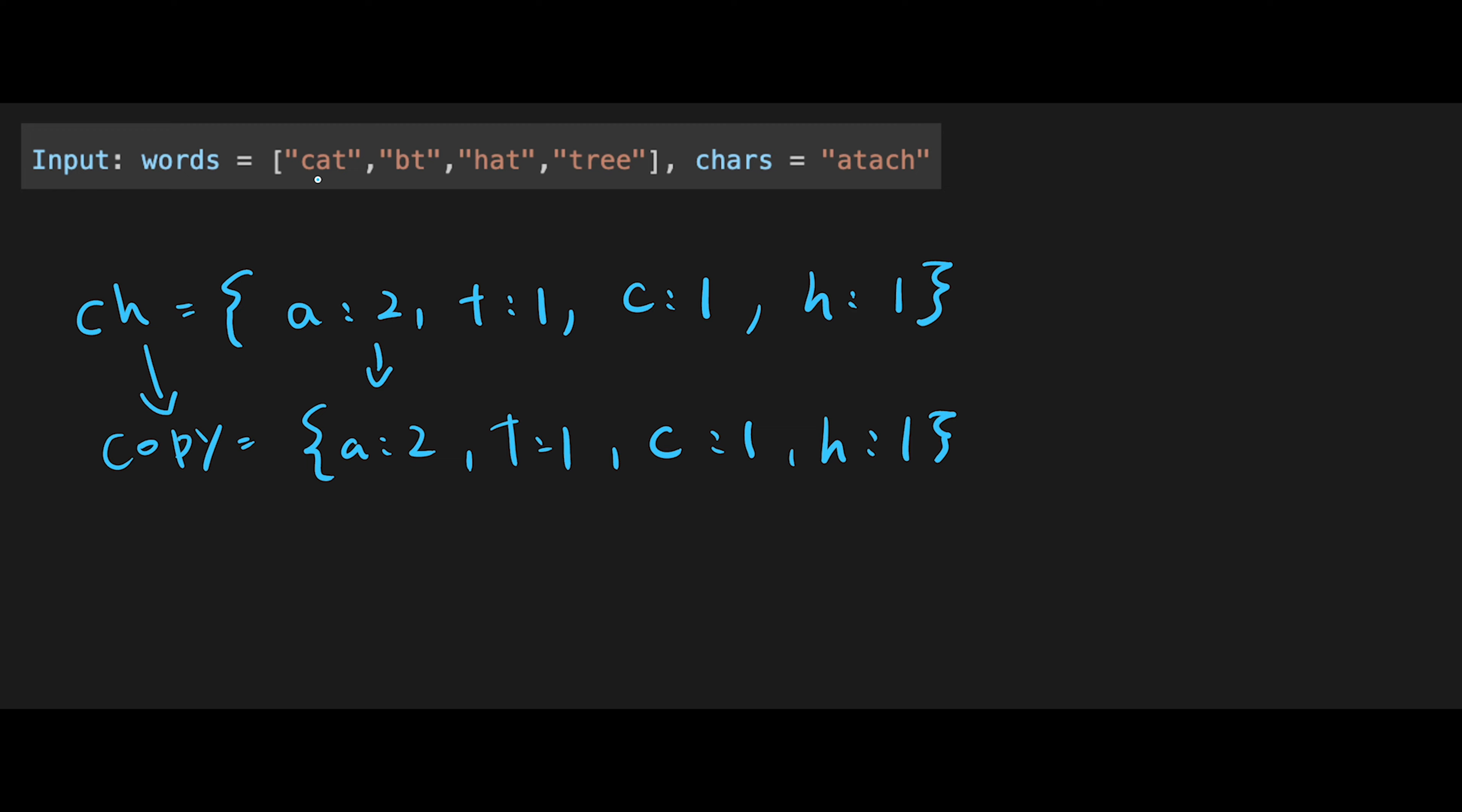So let's begin. First of all, we find cat. Iterate through one by one. We find c, 0. And we find a, and we find t. So we can create cat with these characters, right?